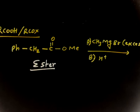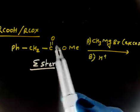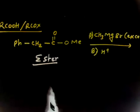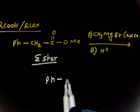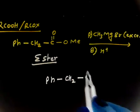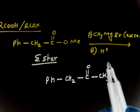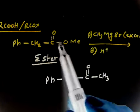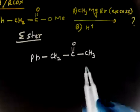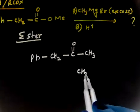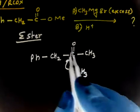In the case of ester, the Grignard reagent will attack, this opens up. The first product is Ph-CH2-C=O-CH3 because nucleophilic acyl substitution takes place. This attacks and this goes. In the next step, again CH3- can attack here.